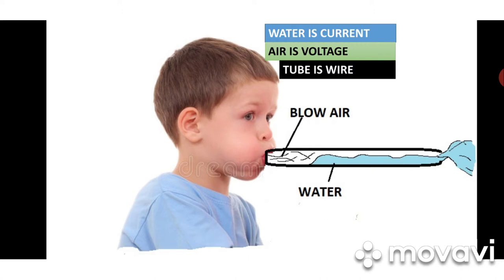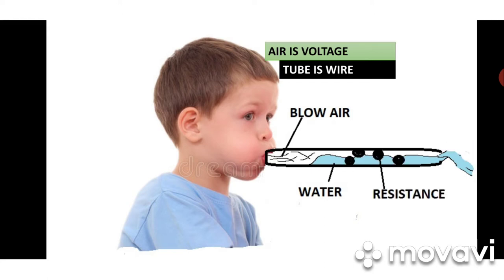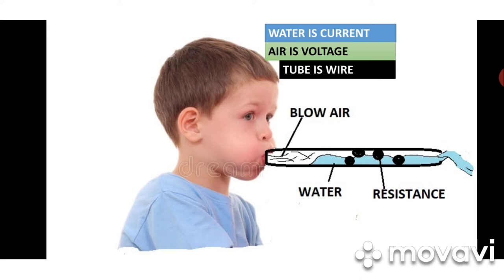When you blow faster, the air moves faster and water goes faster. When you blow slowly, the water reaches the other part slowly. The same thing applies in electricity: when voltage is high, current moves faster; when voltage is low, current moves slow. You have definitely experienced in your home that sometimes your fan rotates slowly — that is because of low voltage.